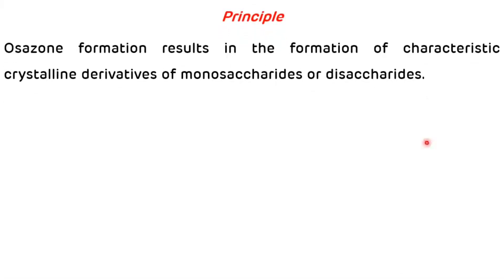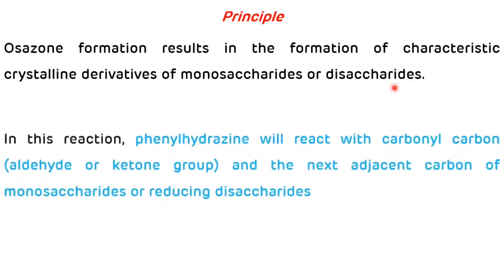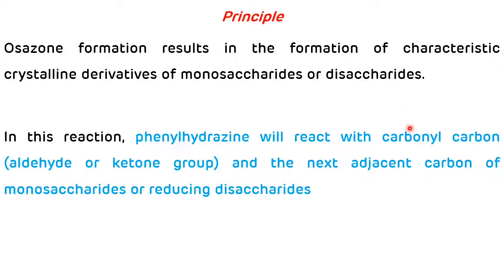Now we will discuss the principle of the osazone test. Osazone formation results in the formation of characteristic crystalline derivatives of monosaccharides or disaccharides. In this reaction, phenylhydrazine will react with the carbonyl carbon — that is, the aldehyde or ketone group — and the next adjacent carbon of monosaccharides or reducing disaccharides.